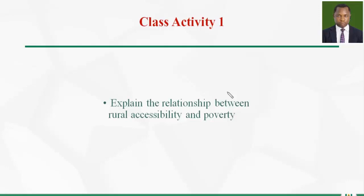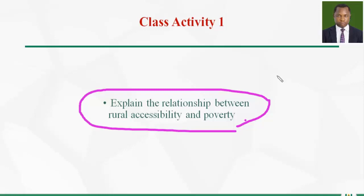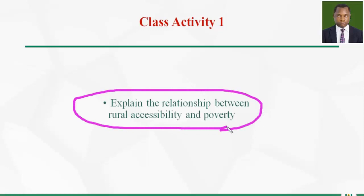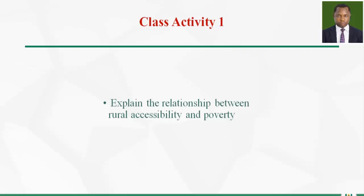Now for our class activity, you will attempt this question on your own. You don't need to submit it to anyone — assess yourself and see if you can deal with it. The question is: explain the relationship between rural accessibility and poverty. We have discussed that briefly, so you should be able to expand on it. Also look into your course material to ensure you can fully address this question.